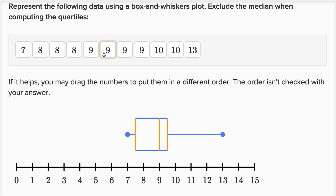And now we need to figure out what number is the median of the numbers in this bottom half. And they told us to exclude the median when we compute the quartiles. So this was the median, let's ignore that. So let's look at all the numbers below that: this nine, eight, eight, eight, and seven. So we have five numbers.